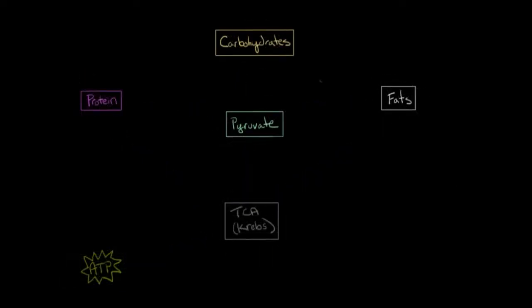So metabolism's kind of like the pawn shop of the body. We take macronutrients like protein and carbohydrates and fats, which have vast stores of energy, but our body can't directly use that energy. In order to use it, it has to be converted into usable energy in the form of ATP.